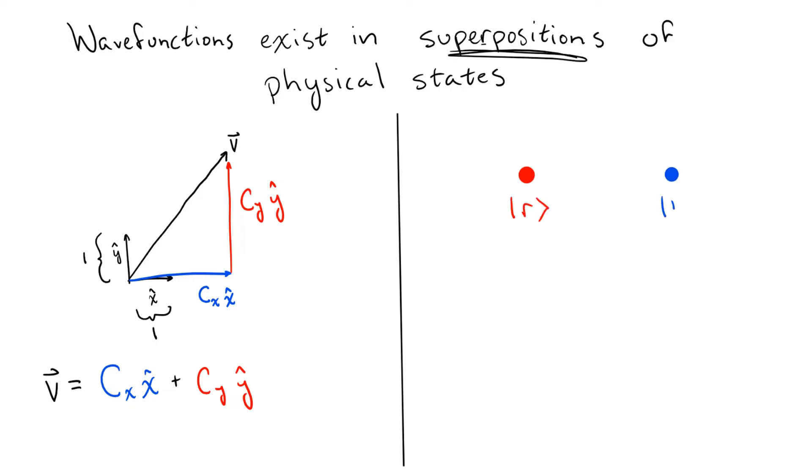Similarly, if we have a particle which can exist in two different physical states, call them the red state and the blue state, or r and b for short, we can write a general wavefunction for the particle as a scaled sum of these two physical states.